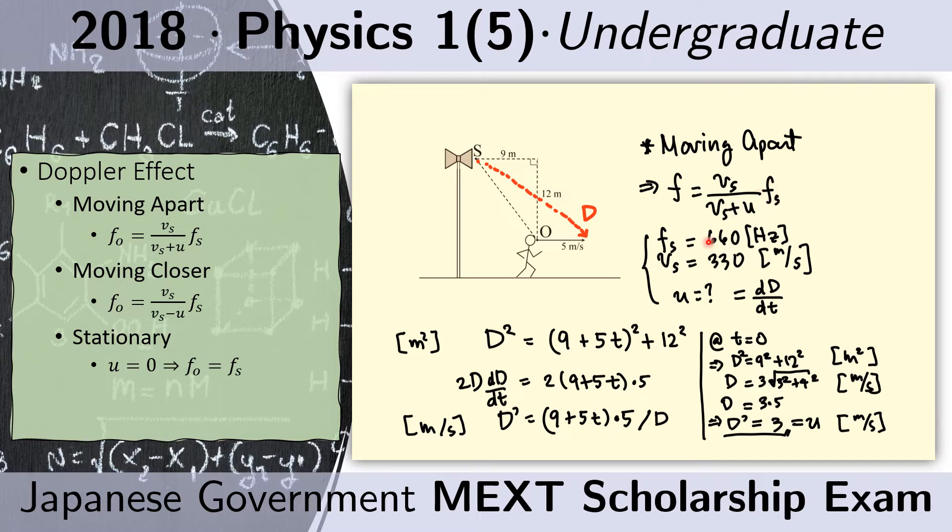The frequency of the sound is given to be 660 hertz. The speed of sound is given to be 330 meters per second. We are left to find this U here, the relative speed between the speaker and the observer.